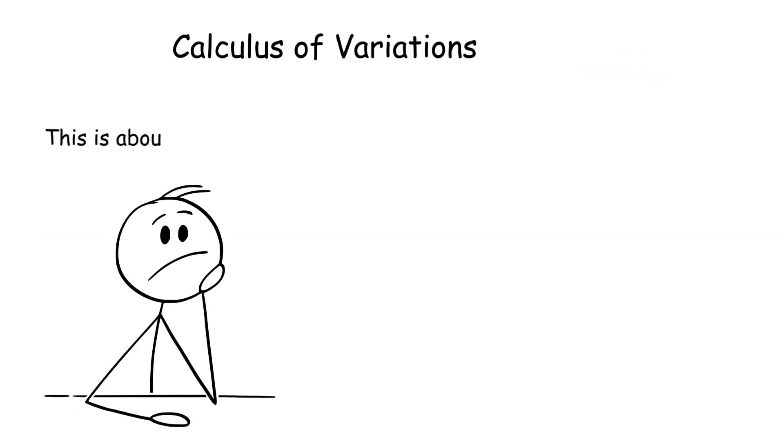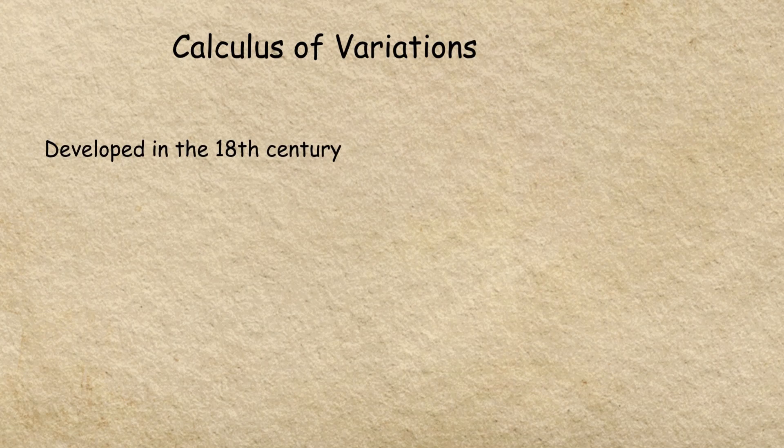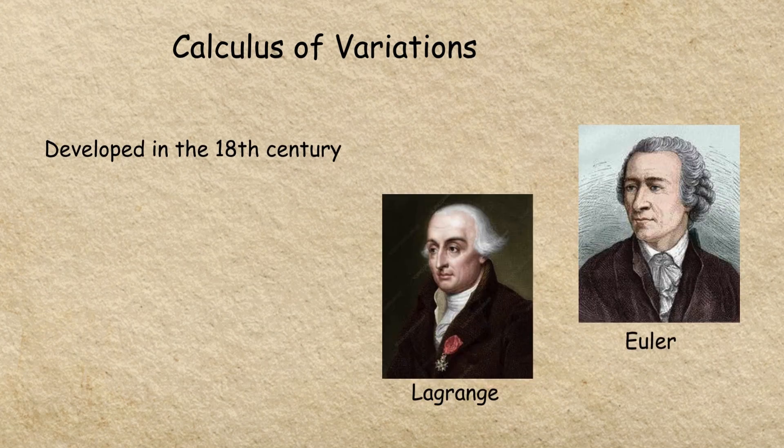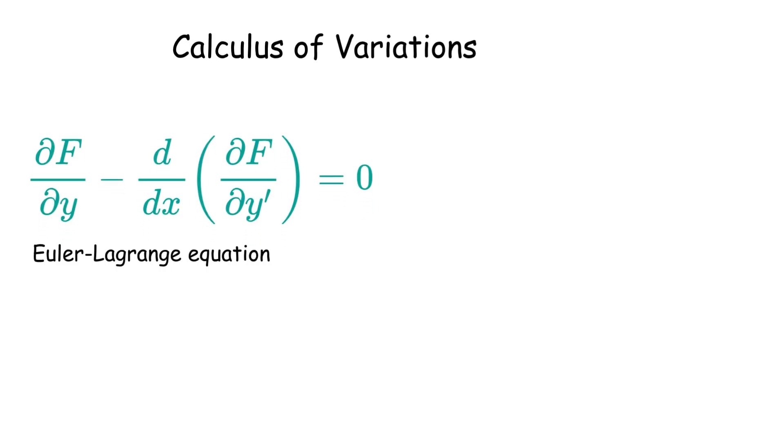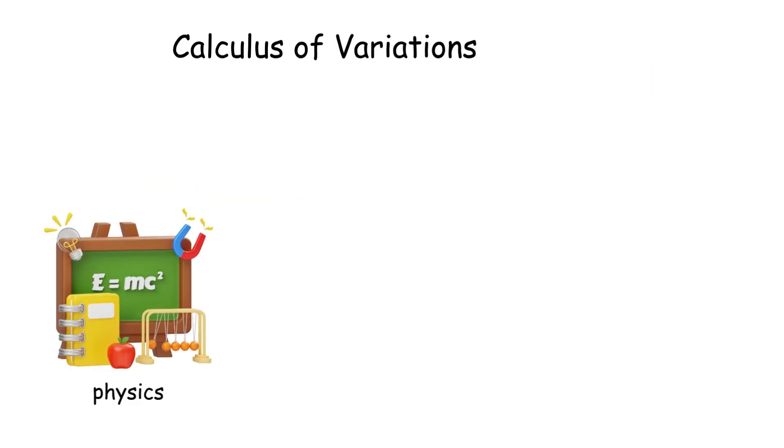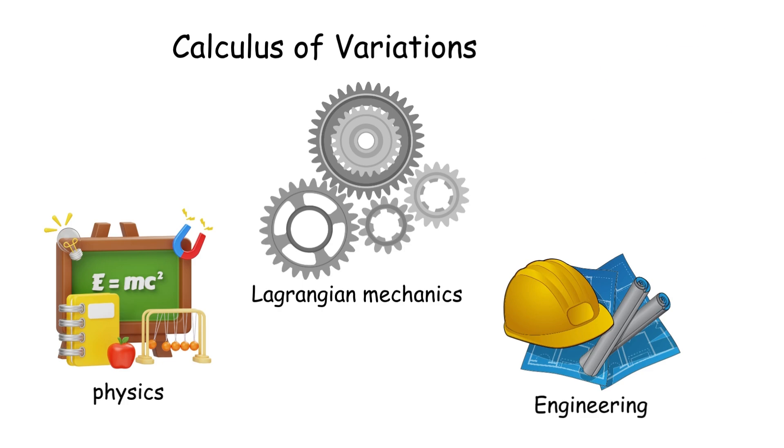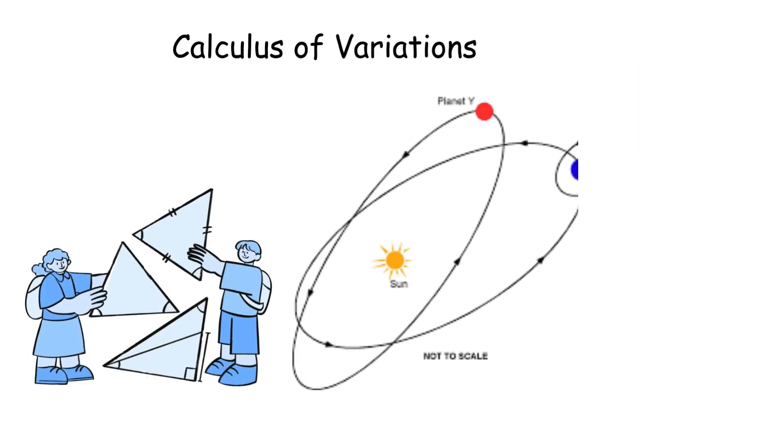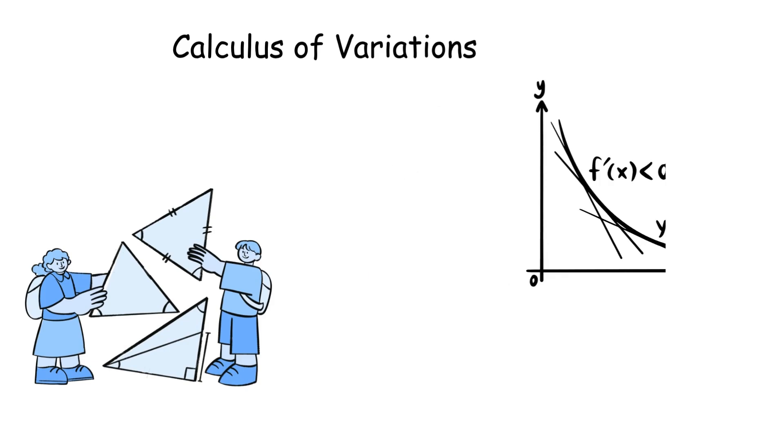Calculus of variations: This is about finding the best path or shape, like the shortest route or minimal surface. Developed in the 18th century by Euler and Lagrange, it optimizes functionals—functions of functions. The Euler-Lagrange equation is its core tool, solving problems like the Brachistochrone, the fastest descent curve. It's used in physics for Lagrangian mechanics, and in engineering for optimal control. For example, it helps design fuel-efficient spacecraft trajectories. Unlike standard calculus, it optimizes over infinite possibilities, making it a powerful but abstract tool for efficiency.